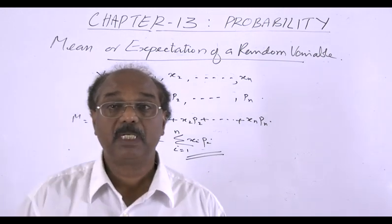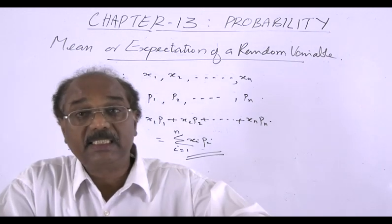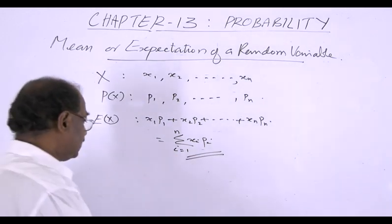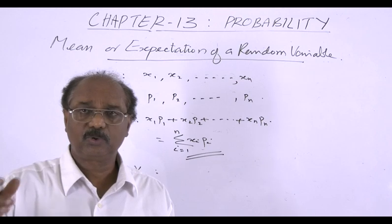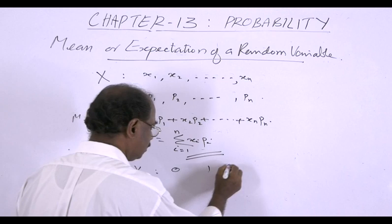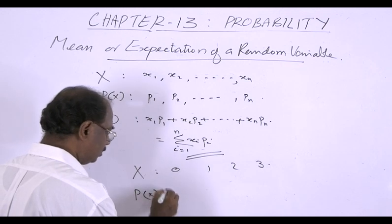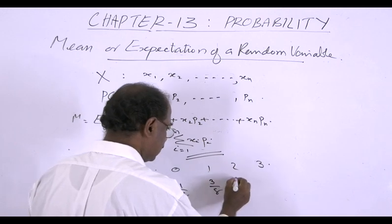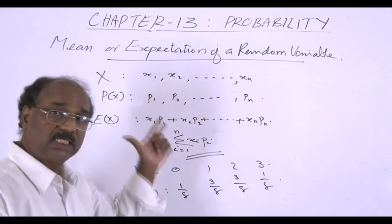For example, consider the tossing of three coins and define the random variable x as the number of heads. The values of x are 0, 1, 2, and 3. The corresponding probabilities are: 0 heads — 1/8, 1 head — 3/8, 2 heads — 3/8, and 3 heads — 1/8.